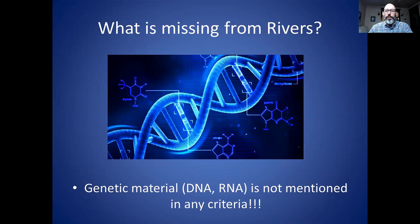Notice what is not in Rivers' criteria: there is nothing about genetic material, DNA, or RNA mentioned at all. You don't even have to look at genetic material to prove these criteria. At least formally, genetic material or specific sequences does not have a role in proving that a virus causes a disease, as specified by the authors of the Nature paper.